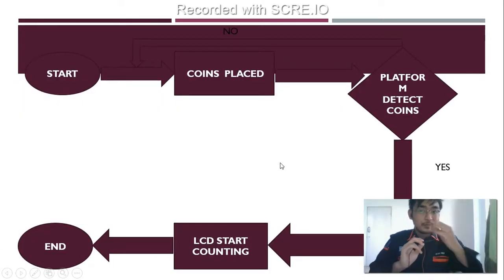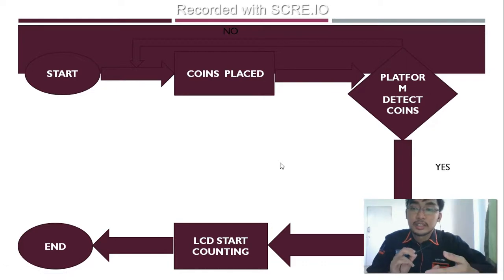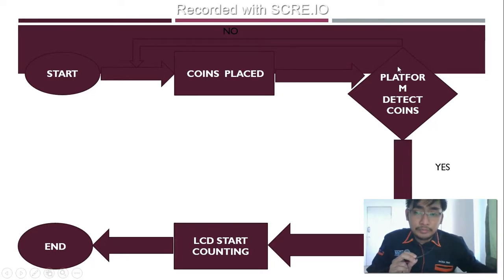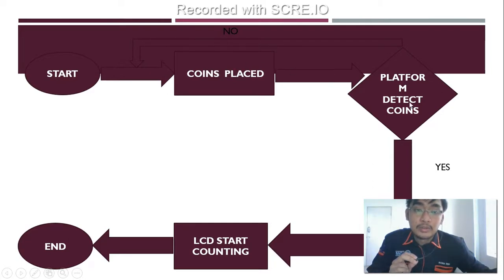This is the flowchart for my project. First, start — a coin is placed and the platform detects the coin. The platform will go down, the LCD starts counting, and the process ends. If the platform did not detect the coin, it turns back and waits for a coin to be placed again. Once detected, the platform goes down and the LCD starts counting.